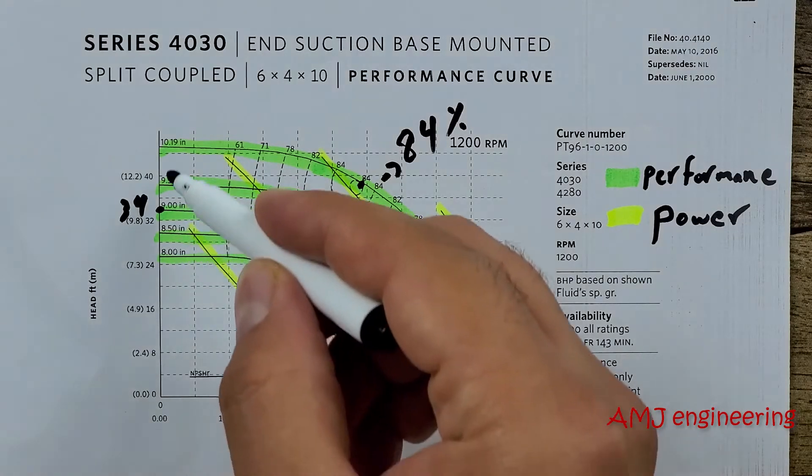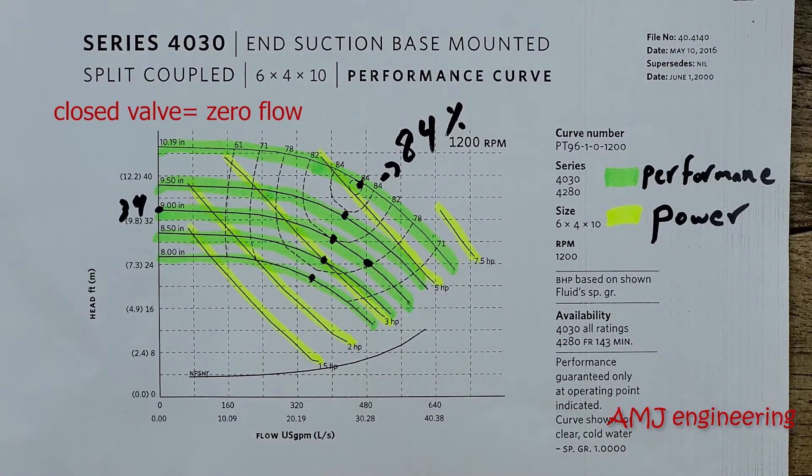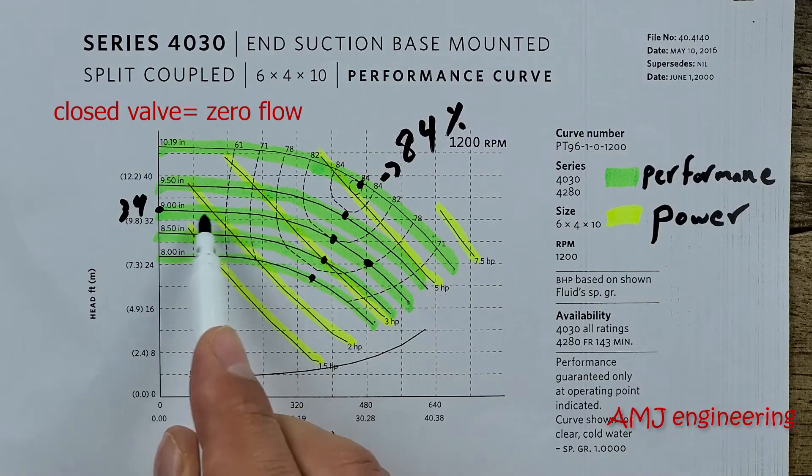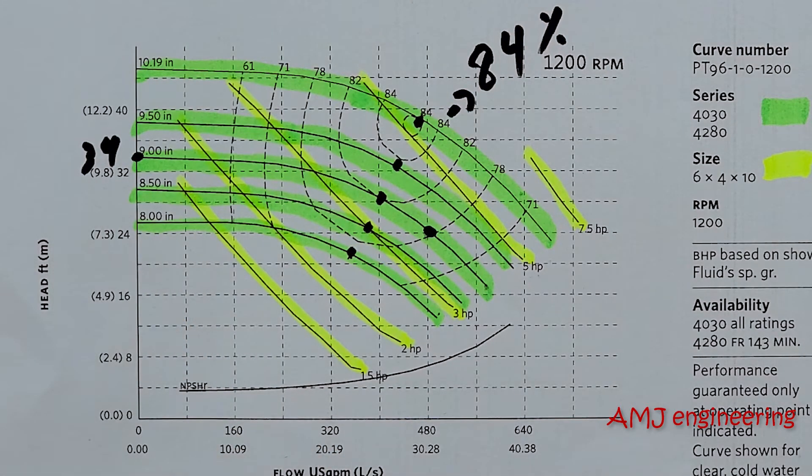These curves also show us the shutoff head, which is the head the pump would generate if operating against a closed valve. In our example here, the shutoff for 9 inches impeller is approximately 34 feet.